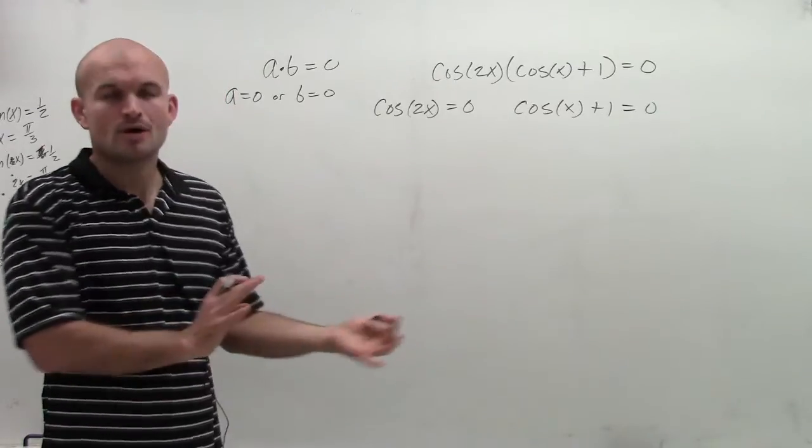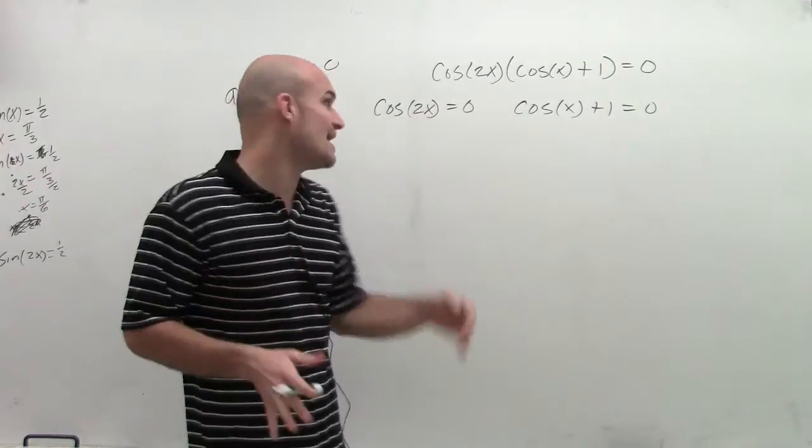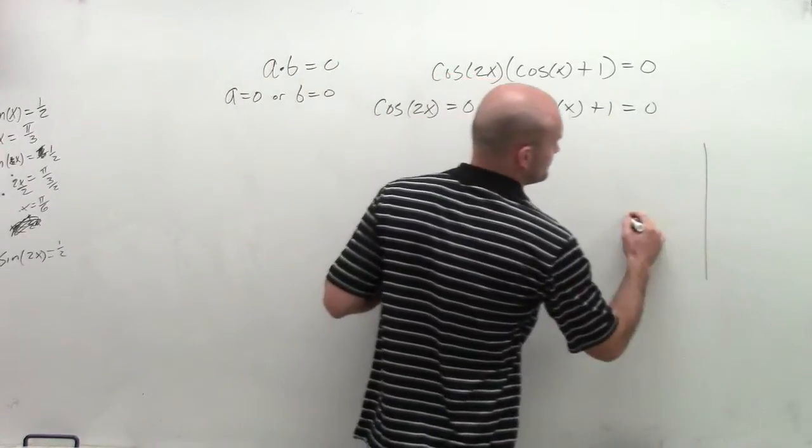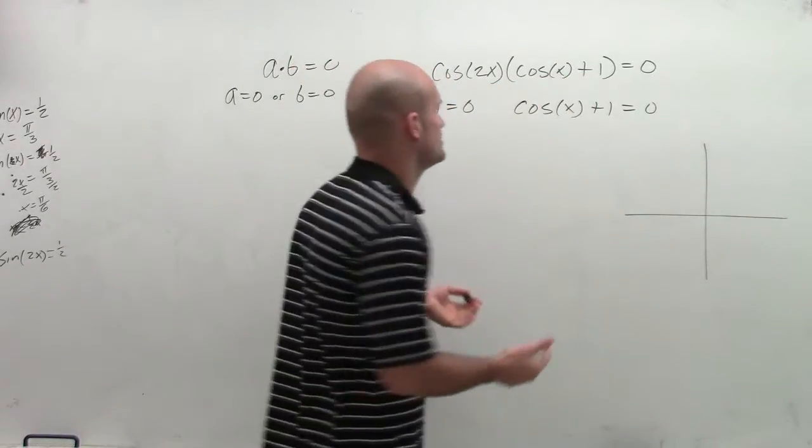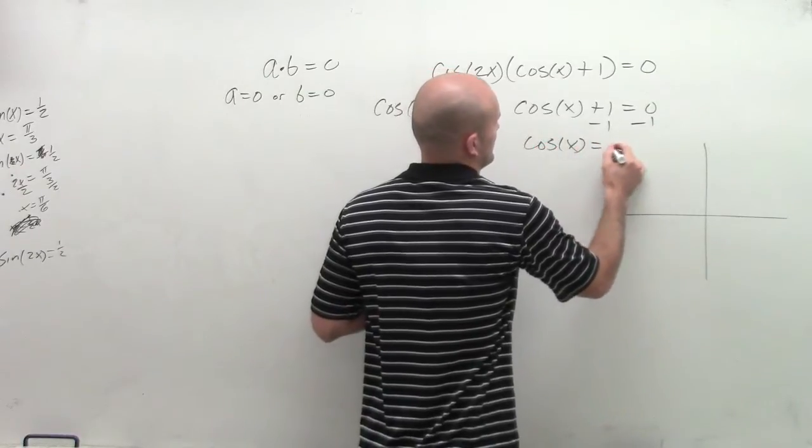Now in dealing with the multiple angle, we're going to deal with this exactly how we would with this problem, except at the end we will address the multiple angle. So the first thing we need to do is figure out when is cosine equals 0 and when is it going to equal negative 1.